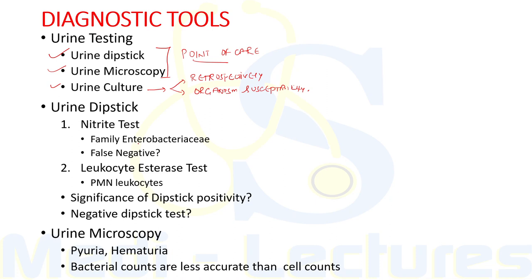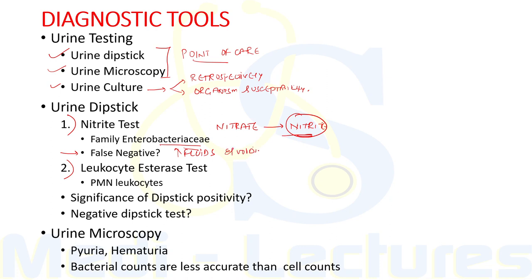A false negative nitrite test can occur when a woman with acute cystitis is drinking excess fluids and voiding frequently, as this does not allow sufficient accumulation of nitrite in urine to reach the detection threshold. If dipstick tests are positive, they confirm the diagnosis of acute uncomplicated cystitis in a patient with reasonably high pre-test probability based on history. For example, if a patient has both dysuria and frequency and the dipstick is positive, antibiotic therapy can be started directly. However, a negative dipstick does not rule out bacteriuria — in pregnancy, microscopy or urine culture must be ordered.